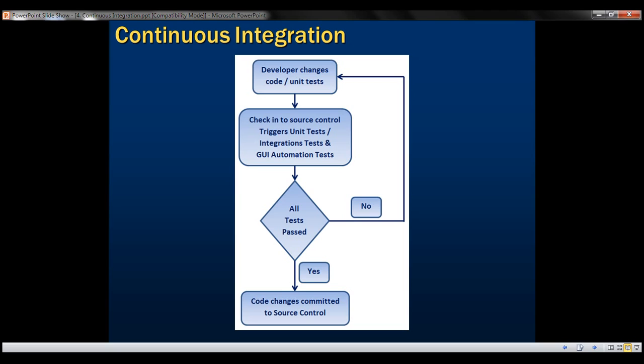The developer will then run the unit tests on their local machine to make sure all of them pass, get the code reviewed by a senior or a fellow developer, and quickly manually test the changes. At this point, the developer is ready to check in their changes into the source control repository.